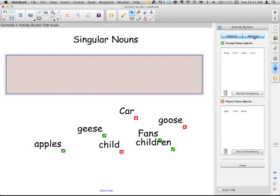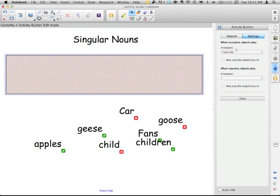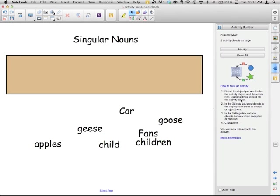So, settings. The accepted, which are actually the wrong ones: children, fans, geese, apples. Fade them out. I want them out of there. Get rid of them. Play a sound if you want to. Rejected objects, what do I want them to do? Nothing. Just put them in the box. Play the sound if you want to. Just put them in the box because then we're going to be able to talk about them at the end. I'm going to click done.